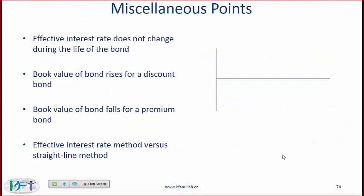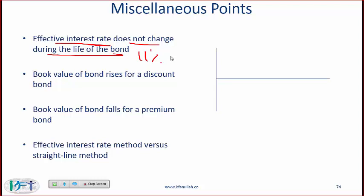Some miscellaneous points: when you talk about financial reporting, the effective interest rate does not change during the life of the bond. So if we started at 11%, we stay at 11%. This is very different from fixed income, where bond price varies based on the current market rate. With financial reporting, unless you are doing fair value reporting, you stick to the original effective interest rate at issuance.